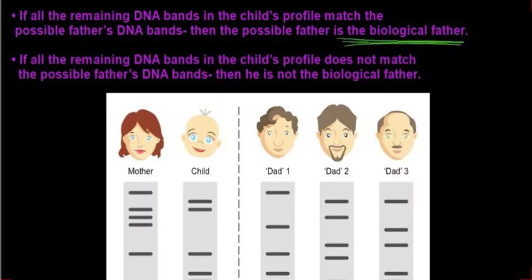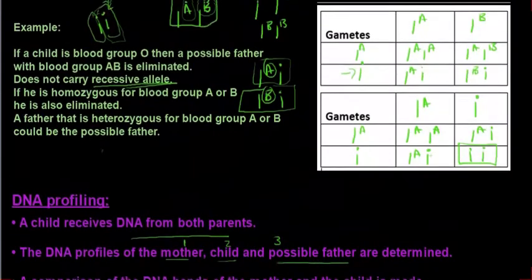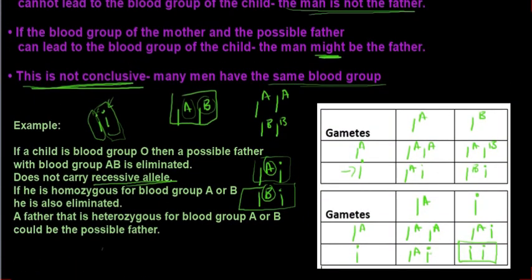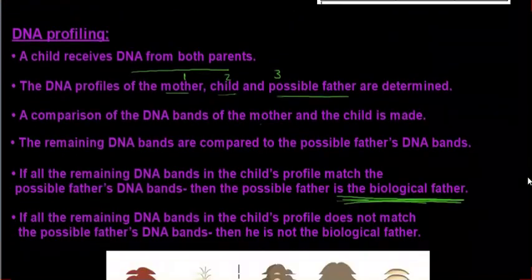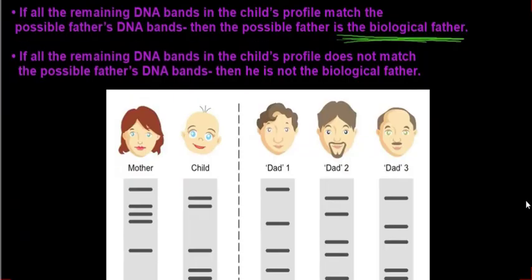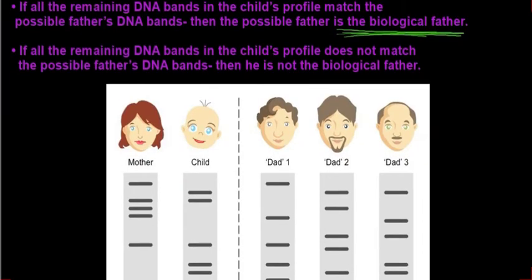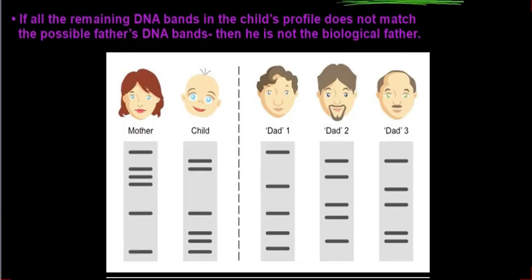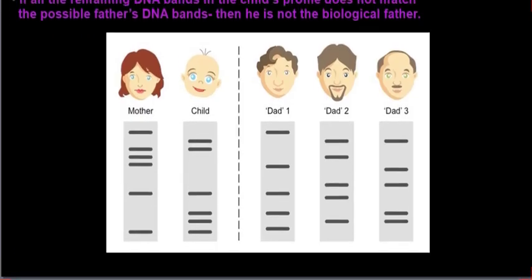Notice the difference in terms used here — they are very specific and say that he is the biological father, whereas with blood grouping they say that he might be the father. So DNA profiling is much more specific with the outcomes. If all the remaining DNA bands in the child's profile do not match the possible father's DNA bands, he is not the biological father.